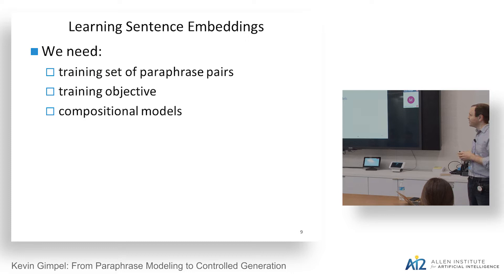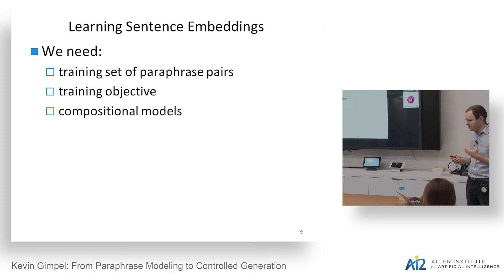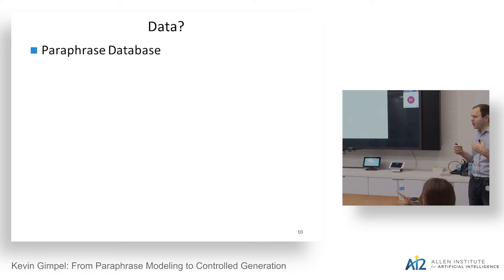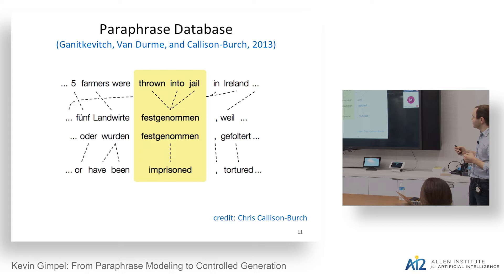We've done a lot of work over the past few years developing good datasets for training these models, variations of loss functions, and comparing compositional architectures. I'll give some summaries and highlights of where we are today. Data tends to be the most important factor among these three.